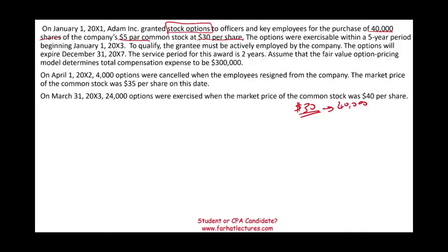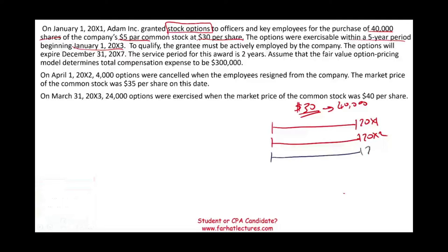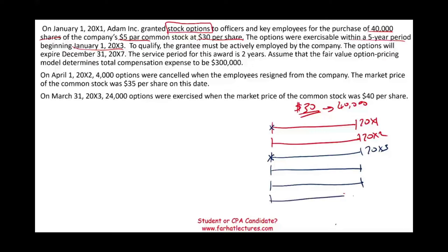The options were exercisable within a five-year period beginning January 1st, 20x3. Let's look at a timeline. The grant date is January 1st, 20x1, and they become exercisable starting 20x3. Once exercisable, they are available to employees for five years: 20x3, 20x4, 20x5, 20x6, and 20x7.